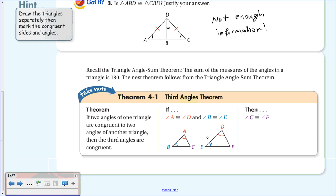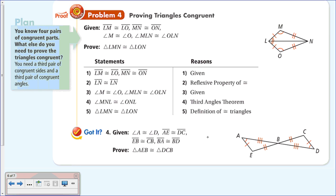Now a proof of congruent triangles. Given: LM is congruent to LO, MN is congruent to ON, angle M is congruent to angle O, and angle MLN is congruent to angle OLN—all marked on the diagram. We want to prove the two triangles are congruent. Statement 1: LM ≅ LO and MN ≅ ON—given. LN ≅ LN by the Reflexive Property. Angle M ≅ angle O—given.